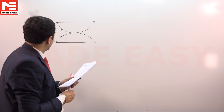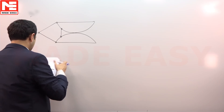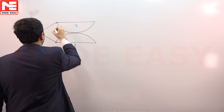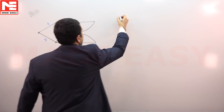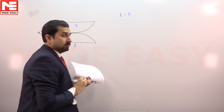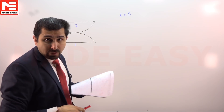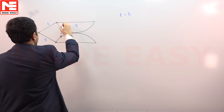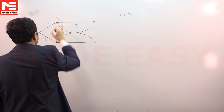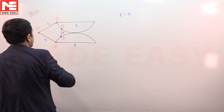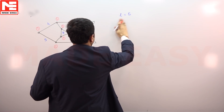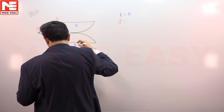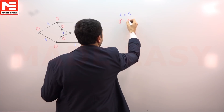Let me count first the number of links. The links are 1, 2, 3, 4, 5 — so the total number of links is 5. Now we count the effective number of binary joints: one binary here, one here, one here, one here, one here — so total binary joints j equals 1, 2, 3, 4, 5. They are also 5.